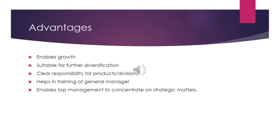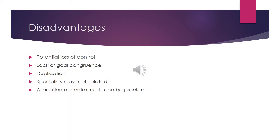If we talk about the disadvantages of divisional structure, first of all it leads to potential loss of control by the top management, as top management will be concentrating on strategic matters rather than operational matters. For the same reason it will lead to lack of goal concurrence. Also there will be a duplication of functions within the organization.